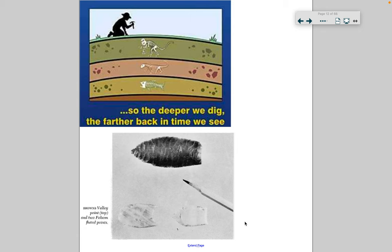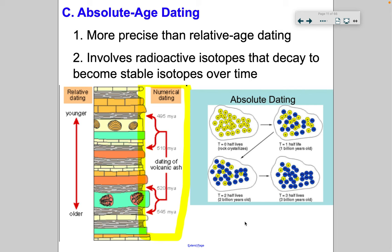The deeper you dig, the further back in time you go — it's kind of like a mini time machine. We actually have our own little history here in Wheaton, in Traverse County, close to Browns Valley. Human remains were found there called the Browns Valley Man. There's a wayside stop with a sign discussing it, and the remains of this individual are estimated to be about 10,000 years old. They also found some artifacts, and absolute age dating was used to date that.